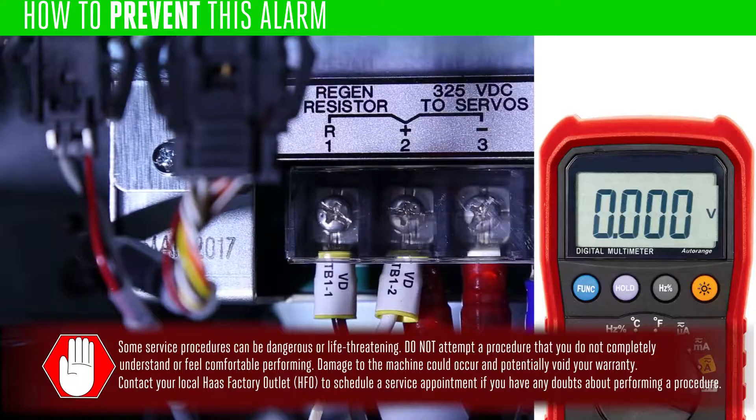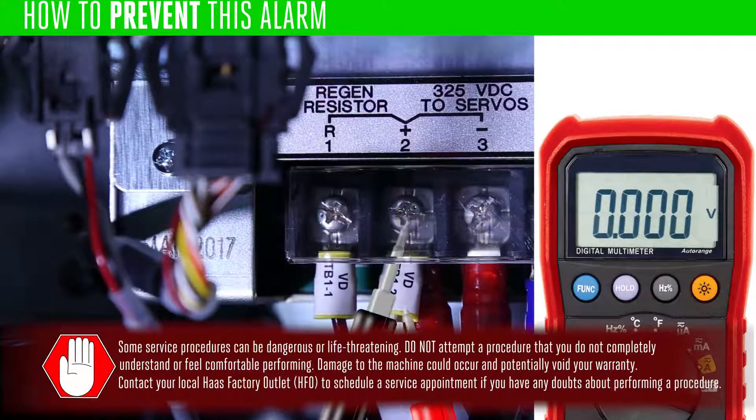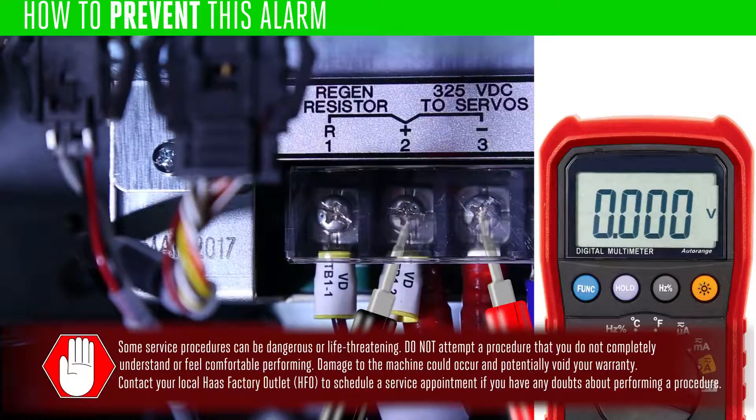To double check, use a voltmeter to make sure there is no voltage at the positive and negative terminals on the vector drive DC bus.